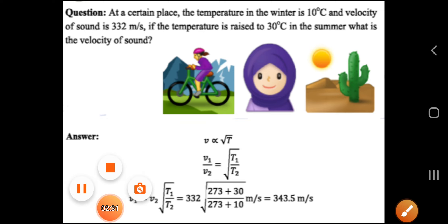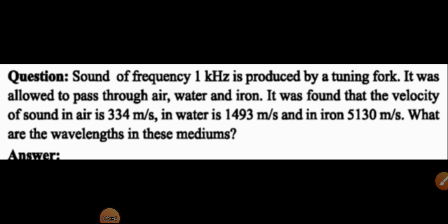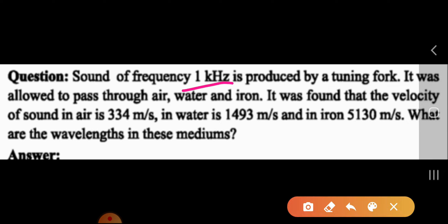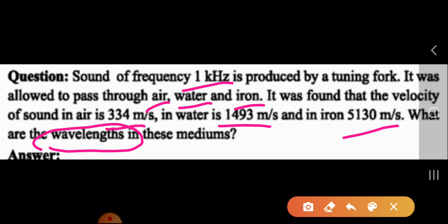Now let's go to another math problem. Sound of frequency 1 kilohertz is produced by a tuning fork. It was allowed to pass through air, water, and iron. It was found that the velocity of sound in air is 334 meters per second, in water is 1493 meters per second, and in iron is 5130 meters per second. We need to find the wavelengths in each medium.